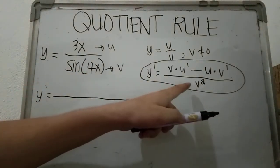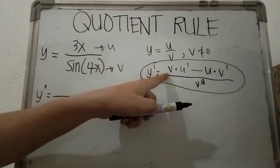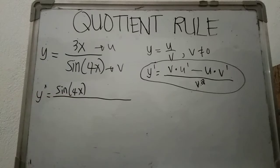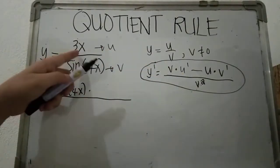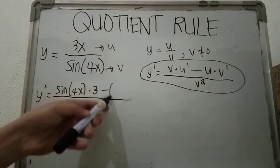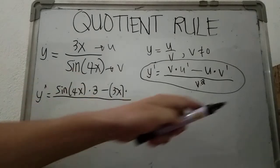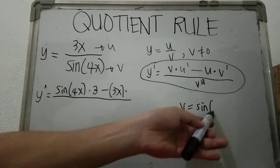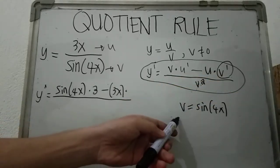So y prime equals: the denominator part, which is sine 4x, times u prime — meaning the derivative of the numerator, which is 3 — minus copy your numerator, which is 3x, multiplied by the derivative of the denominator sine 4x. We need to look for v prime, the derivative of v, which is sine 4x.